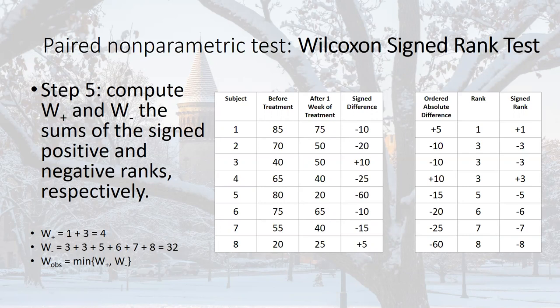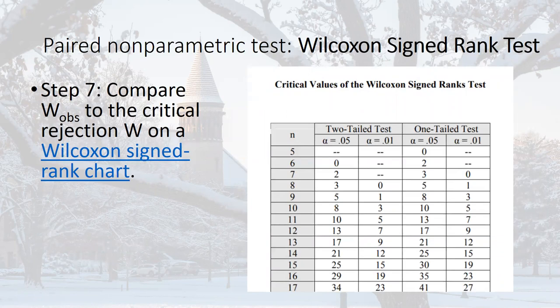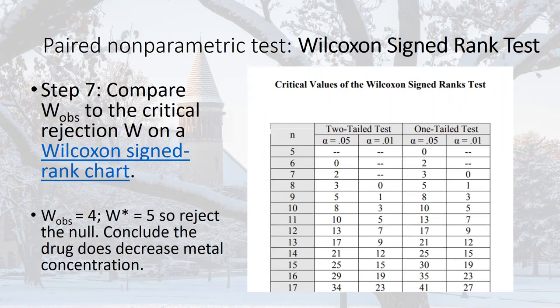Just like we did with the Mann-Whitney U test, the W statistic is the minimum of W-plus and W-minus. So our observed W statistic is 4. The point of all these steps is that this W observed now follows a known sampling distribution. You look up a Wilcoxon chart to find the critical value. For a one-tailed test with alpha equals 0.05 and n equals 8, the critical value is 5. If W is less than 5, we reject the null — which is what we do here since we observed 4. That is the Wilcoxon Signed-Rank test.